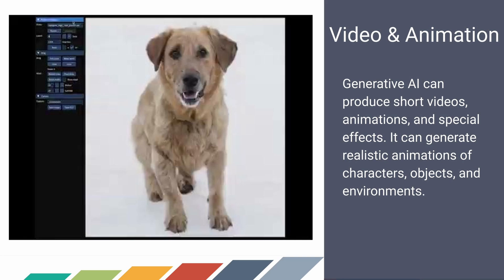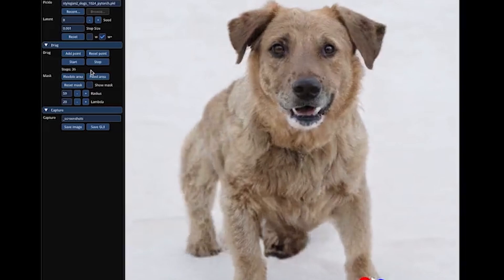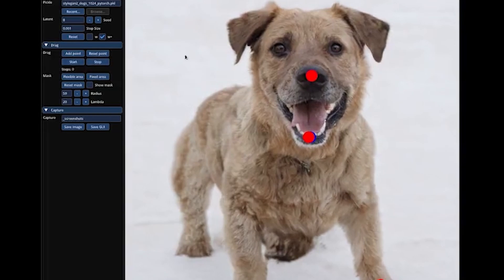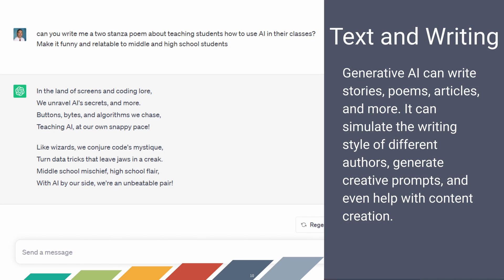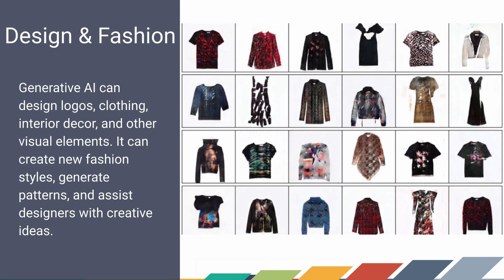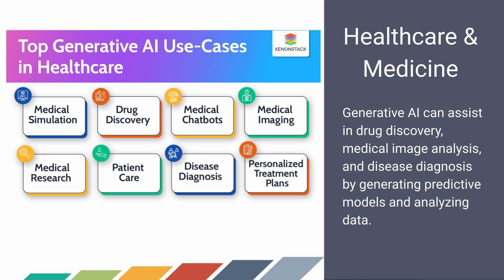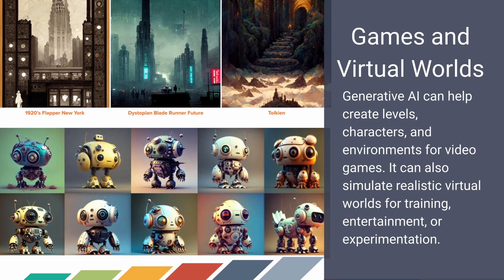There's also video and animation — here's an example of how easy it is to take an image, animate it, and make it look real. This technology is only getting better and easier for everyday people to use. Text and writing is another example your students will be very familiar with. In May 2023, the Writers Guild of America went on strike, asking studios to promise not to use AI to generate scripts or write variations of their already-written work. Generative AI is being used in so many industries: design and fashion, healthcare and medicine, games and virtual worlds. Essentially, work that used to take a long time can now be done much quicker.